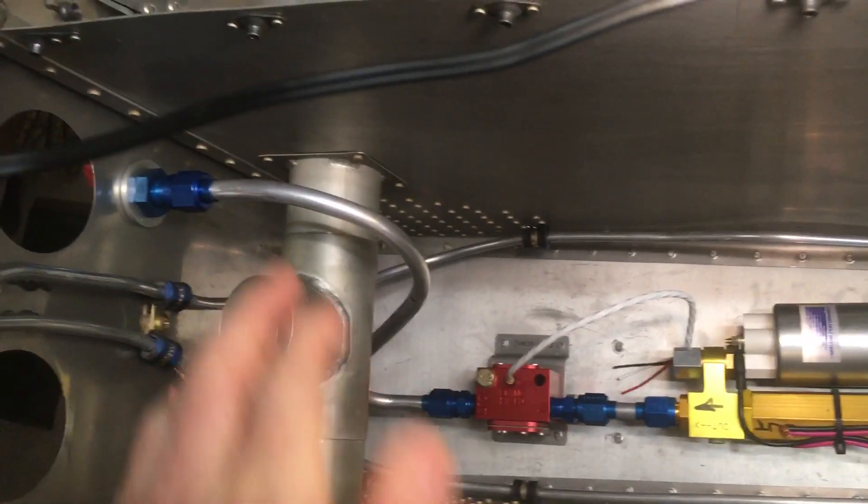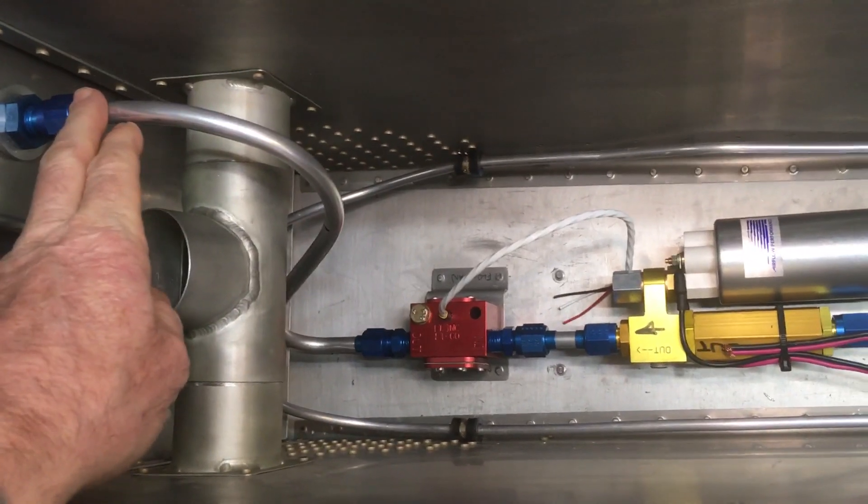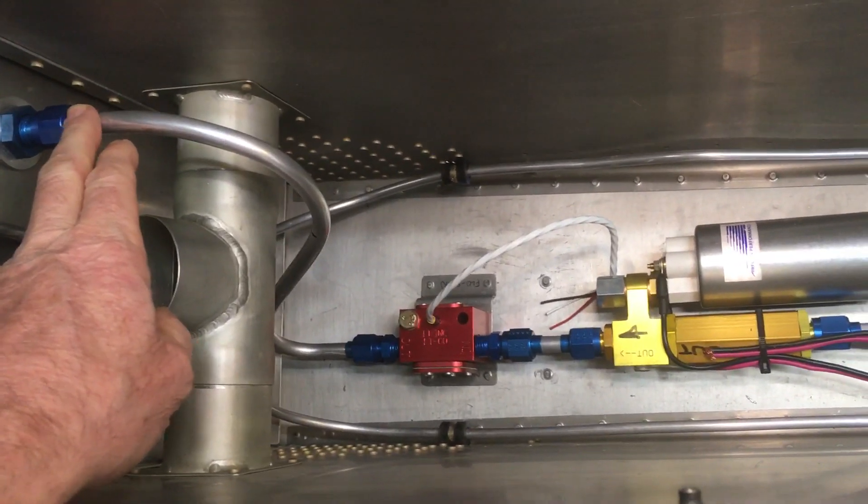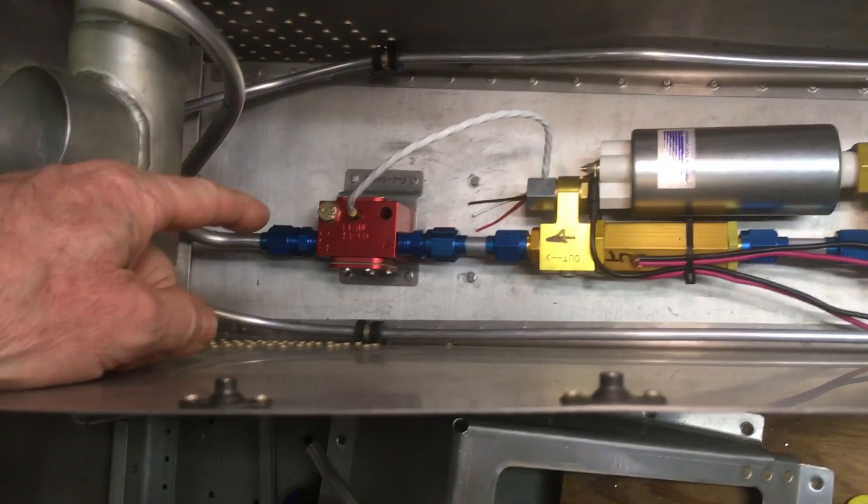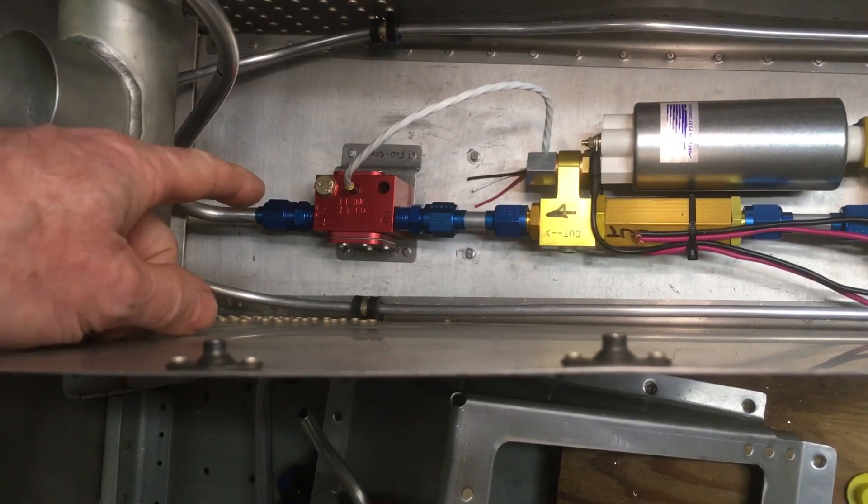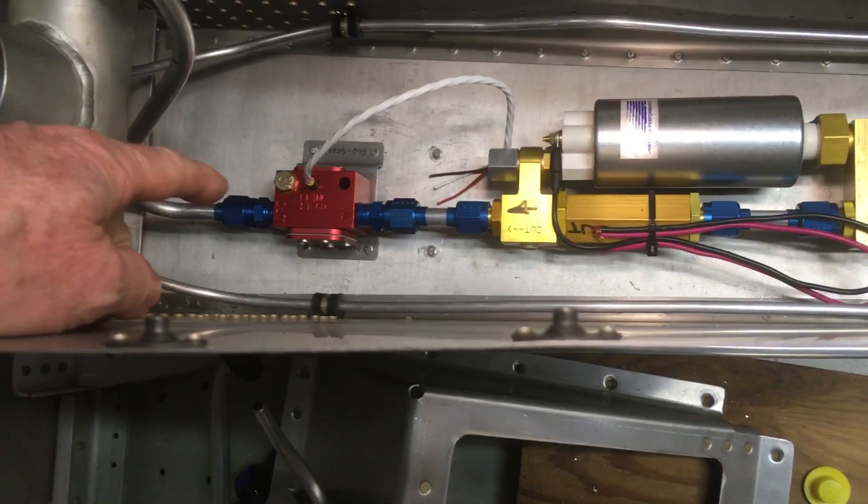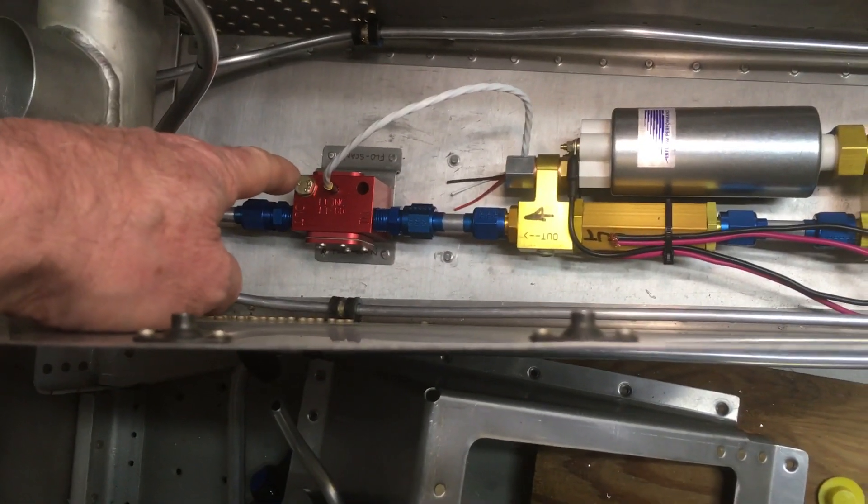There's the fitting and the line up there. I guess that was the first line that I made once I had the Red Cube FD60 installed. I had to move that bracket forward.